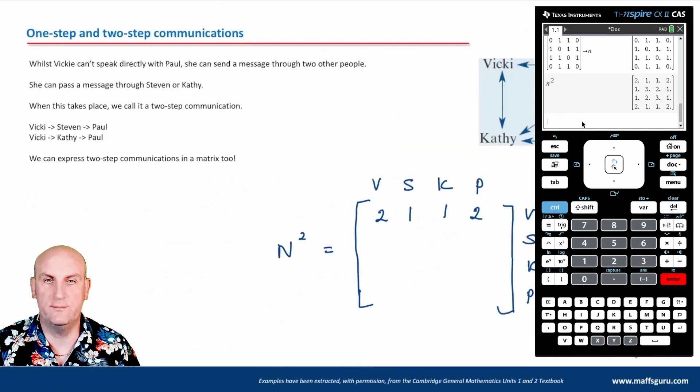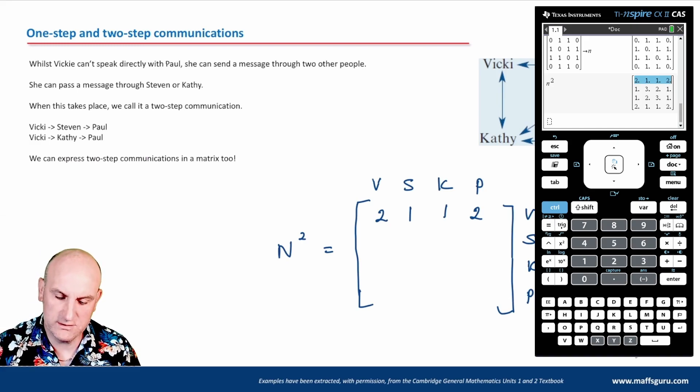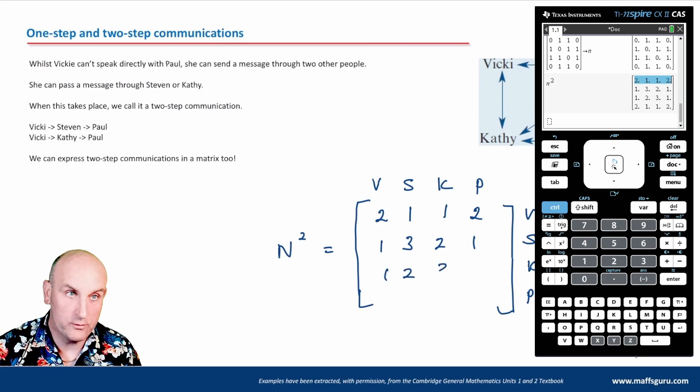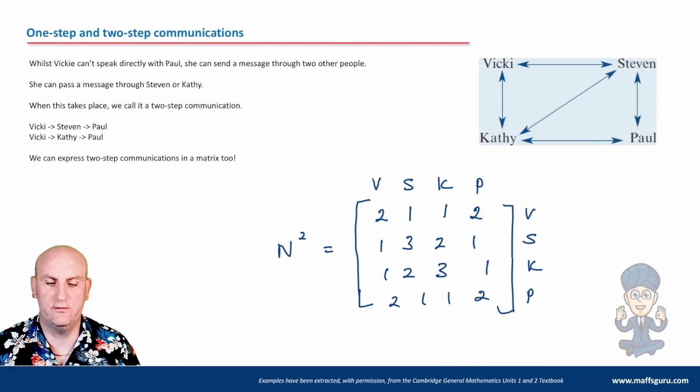Oh my goodness. If I go back to my original matrix 2, 1, 1, 2, that first row there actually matches up. What is this 3? What on earth is that 3 there? So what I'm going to do is just copy this out really quickly. So 1, 3, 2, 1. 1, 2, 3, 1. And 2, 1, 1, 2. Just so I can turn my calculator off.